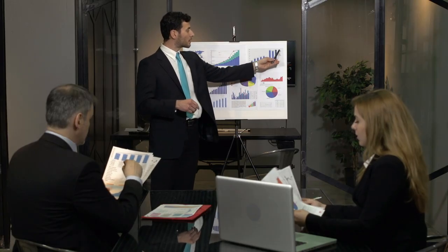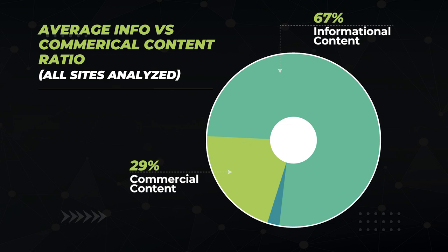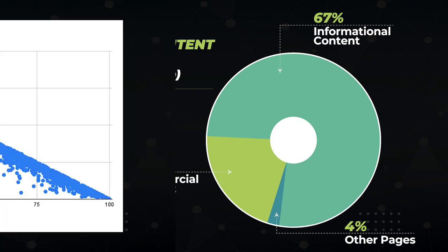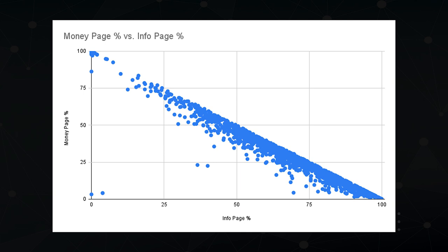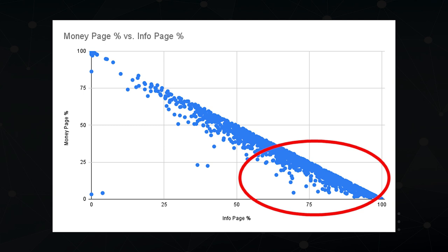From here, we can look at various averages to see what's the sweet spot for success. If we look at all 1,517 sites as a whole, the average ratio of info to commercial content is 67% informational and 29% commercial. Why doesn't this add up to 100%? Because on average, 4% of a site is your standard homepage, about, and contact page type content. Here we take a look at a scatter plot — each dot represents a website, its position determined by how much informational content it has on the x-axis and how much commercial content on the y-axis. This huge cluster tells us that surviving and thriving sites had more informational content — 67% on average.